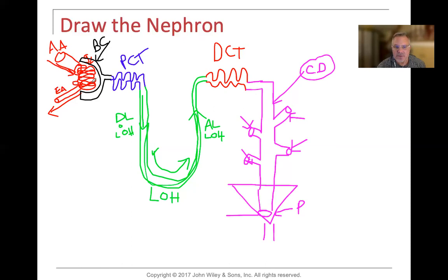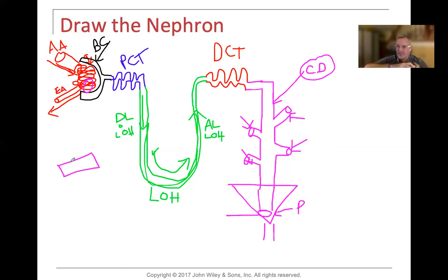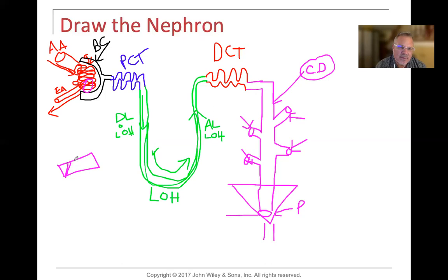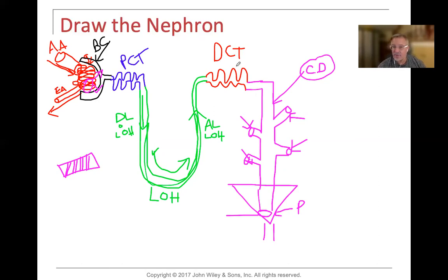We have an afferent arteriole leading into the glomerulus. Surrounding the glomerulus is a podocyte — think of it like the palm of your hand — that creates these filtration slits between its extensions. These very thin extensions of the podocytes create fenestrations or filtration slits, allowing certain things to pass through into the Bowman's capsule and into the tubular system: the proximal convoluted tubule, loop of Henle, distal convoluted tubule, and collecting duct.